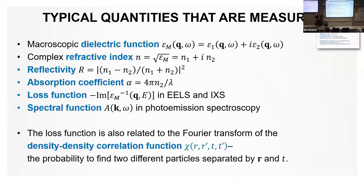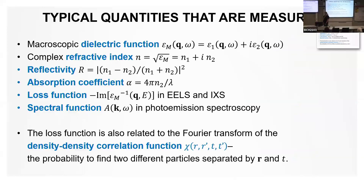Typical quantities measured in these spectroscopies include the dielectric function — in the hands-on sessions you will be calculating many different dielectric functions. It has a real part and an imaginary part, and basically all optical quantities can be derived from these: the complex refractive index, reflectivity, and absorption coefficient related to the imaginary part of the refractive index. The loss function is the imaginary part of the microscopic dielectric function, and the spectral function is often used in photoemission spectroscopy.